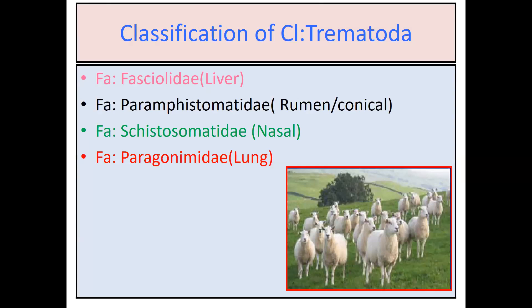Trematoda contains four important families. The first family is Fasciolidae, which includes all liver flukes. The second family is Paramphistomatidae, which contains all ruminal flukes or conical flukes. The third family is Cystosomatidae, which includes all nasal flukes. And the fourth family is Paragonimidae, which includes all lung flukes.